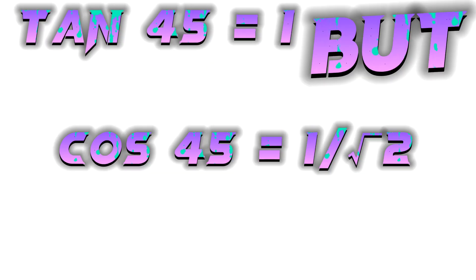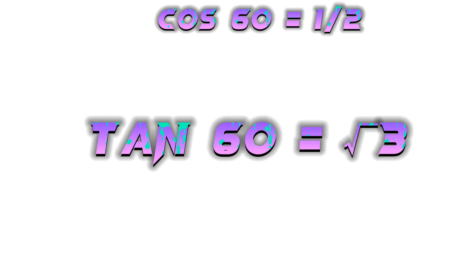Cos 30 is root 3 by 2. Sine 45 is 1 by root 2, cos 45 is 1 by root 2, tan 45 is 1. Sine 60 is root 3 by 2, cos 60 is 1/2, tan 60 is root 3. Sine 90 is 1, cos 90 is 0.